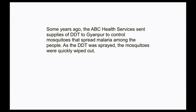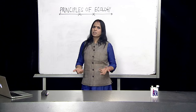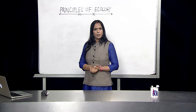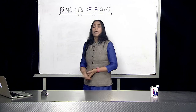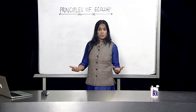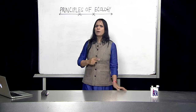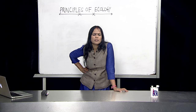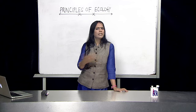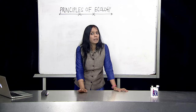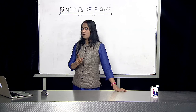A few years ago — maybe 10, 20, or 30 years back — there was a city I've called Gyanpur, which had a municipal corporation and a health service department. They realized that there were too many mosquitoes and therefore malaria was spreading in their city. So the wise people and corporation of Gyanpur decided to kill the mosquitoes — they sprayed DDT. We know that when you spray DDT on grasses, open areas, and water bodies, they kill the mosquitoes. And that's exactly what happened — the mosquitoes got killed, so malaria would hopefully be gone.